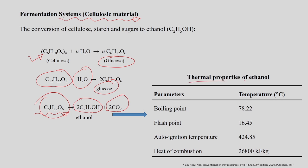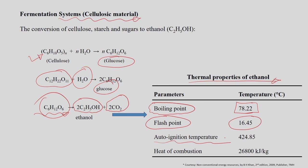The thermal properties of ethanol produced during this process include a boiling point of 78 degrees Celsius, a flash point of around 16.45 degrees, and an auto-ignition temperature of around 424 degrees. The heat of combustion of ethanol is around 26.8 megajoules per kg, which is a relatively good value. The main feedstocks discussed are sucrose, starch, and cellulose.